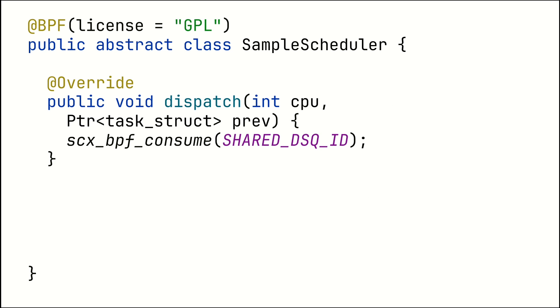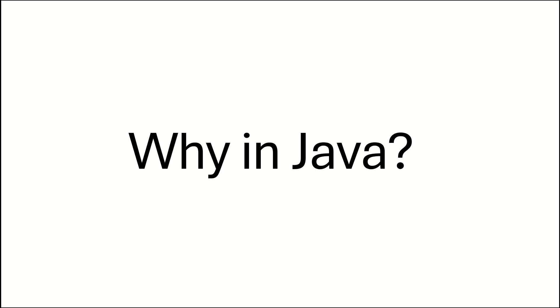Every time a CPU wants to run something because the previous process finished its time slice, we just call scx_bpf_consume and tell it to consume a new task from this queue.